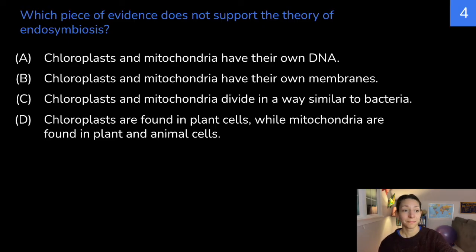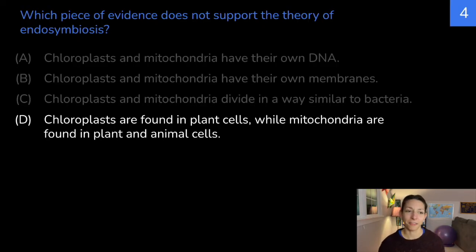Correct answer is D, chloroplasts are found in plant cells, while mitochondria are found in plant and animal cells. Although this is a true statement, it does not directly relate to our pieces of evidence that support the theory of endosymbiosis. All these other things are pieces of supporting evidence.